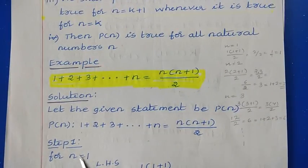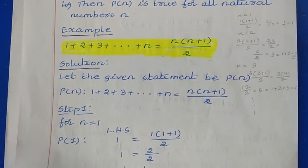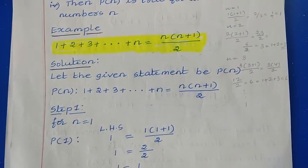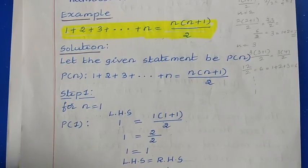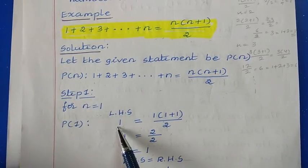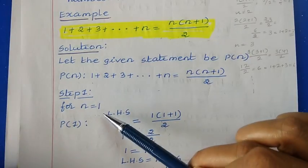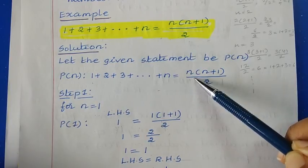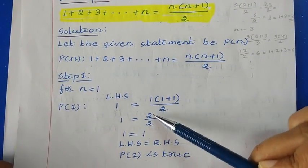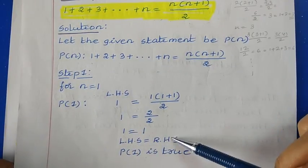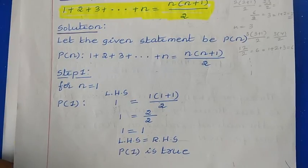For n equal to 1, we evaluate p of 1. On the left-hand side, n equal to 1 means we take the first term, which is 1. On the right-hand side, we substitute n equal to 1 into n into n plus 1 divided by 2, giving 1 into 2 divided by 2, which equals 1. So LHS equals RHS, meaning the statement is true for n equal to 1 — p of 1 is true. This is the first step, also known as the basis step.